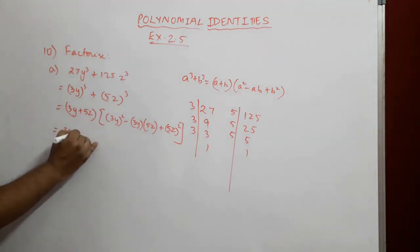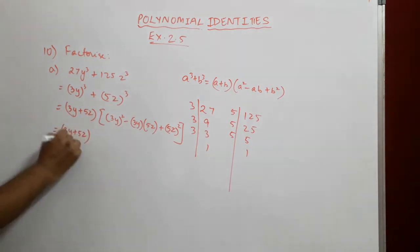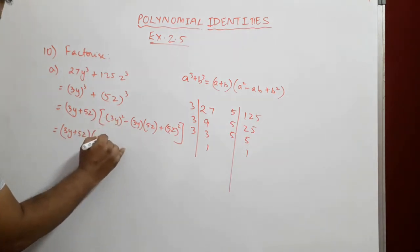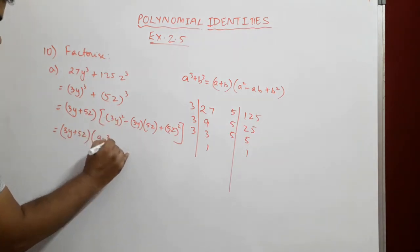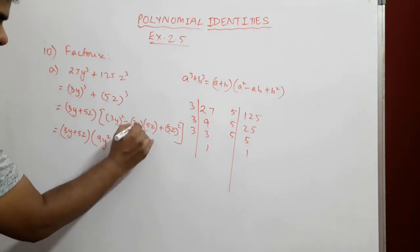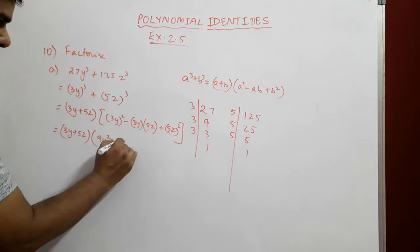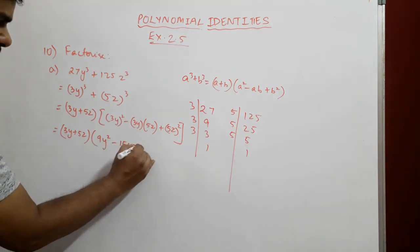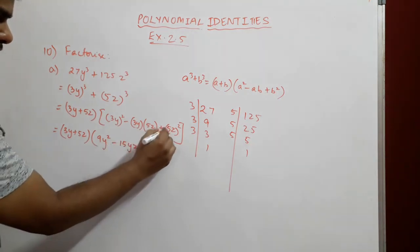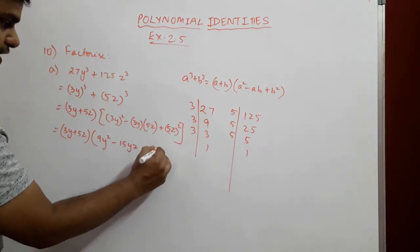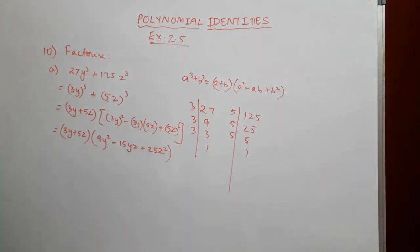Expanding: (3y)² = 9y², (3y)(5z) = 15yz, and (5z)² = 25z². So the final answer is (3y + 5z)(9y² - 15yz + 25z²). That's our answer. Let's solve another one.